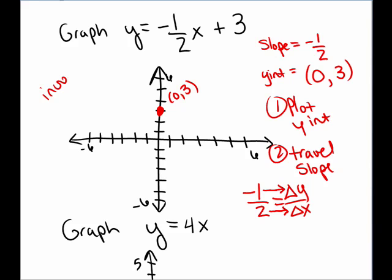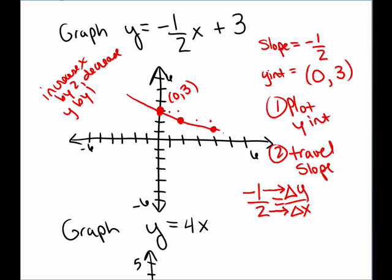So I increase x by 2 and decrease y by 1. I put my cursor on the y-intercept, which is a point on the line, then go over 2 and down 1 to plot another point. I can plot another point: over 2, down 1. And here is a sketch of that graph.